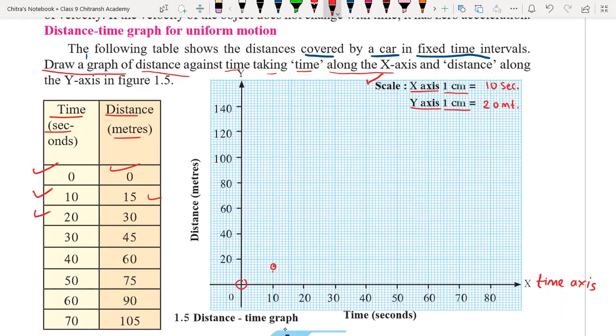Then we have 20 and 30. So 20 and 30 will come here. Between 20 and 40 we will have 30. Then we have 30 and 45. So here we have 35 and here we have 45. 40 over here, that will be 45. Then next we have 40 and 60. So 40 and 60 will be here.